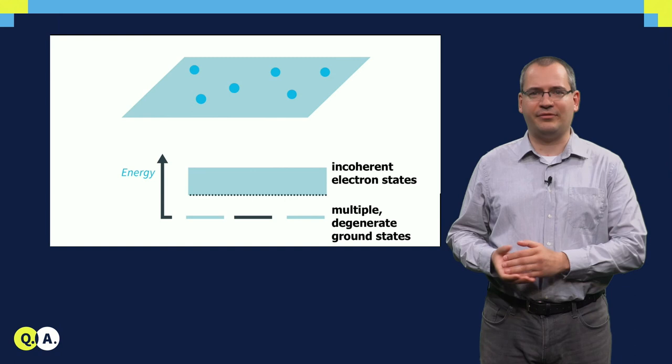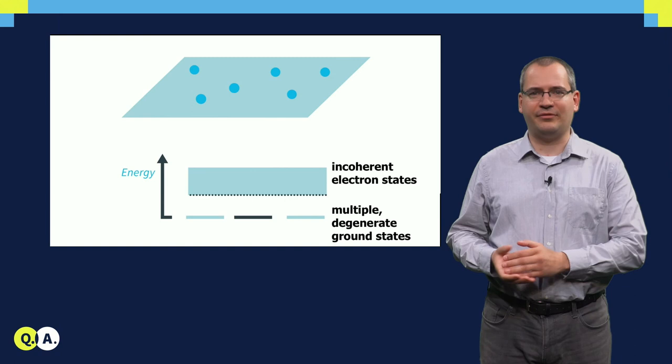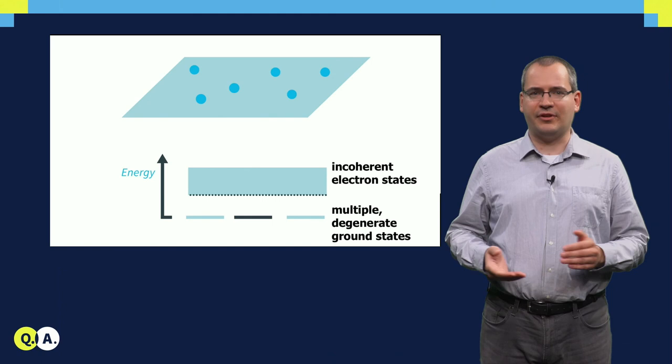If we slightly change the exchange path because of external noise or control infidelity, our quantum operation remains the same. This property is usually referred to as the topological equivalence of the exchange path.